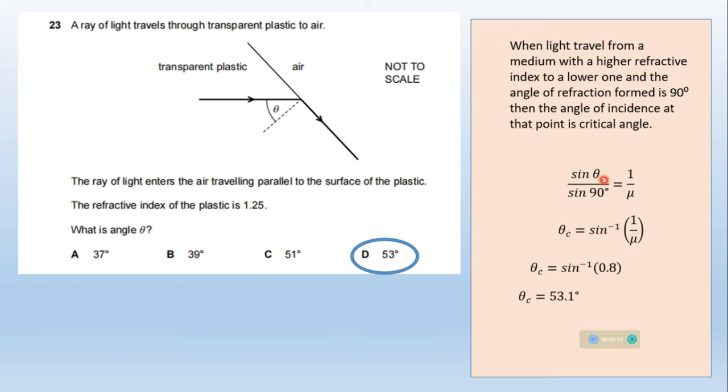Snell's law says that sin i by sin r, where i is the angle of incidence and r is the angle of refraction, equals 1 by n. The angle of incidence is critical angle, so sin theta c divided by sin 90 equals 1 by mu. We can solve using this relationship and the critical angle is 53.1 degrees. Option D is correct.